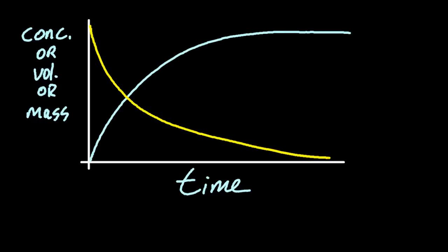Looking at the simplest of the graphs, time is always on the x-axis and let's say for the y-axis, concentration, volume or mass.